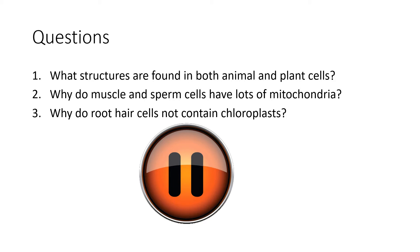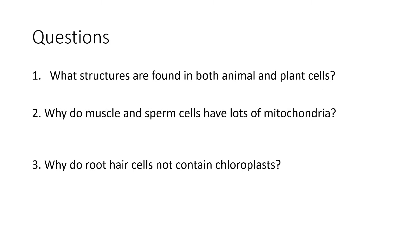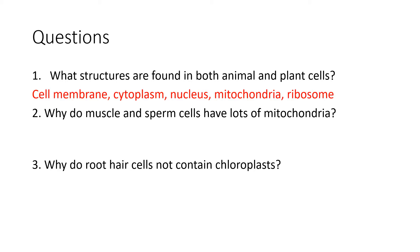I want you to pause the video again and answer these three questions for me. So let's go through the answers. What structures are found in both animal and plant cells? There are five structures: the cell membrane, cytoplasm, nucleus, mitochondria, and the ribosome. That leaves us three structures which are specific to plant cells, and they are the vacuole, chloroplasts, and the cell wall.